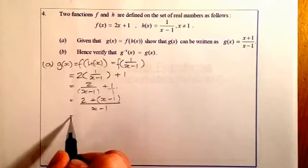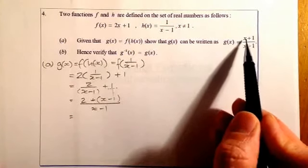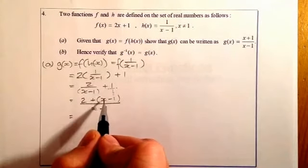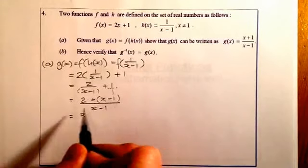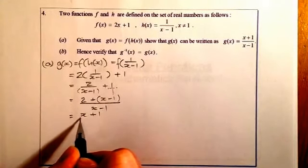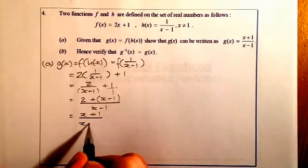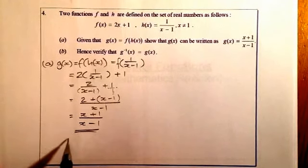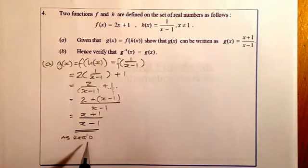I'm then going to tidy it up. I can see in the answer here what I have to show it as — the x terms are first. So there's an x, and then I've got 2 take away 1, which gives me plus 1 on the numerator. And on the denominator I've got x minus 1. So that's it — and that was just as required.